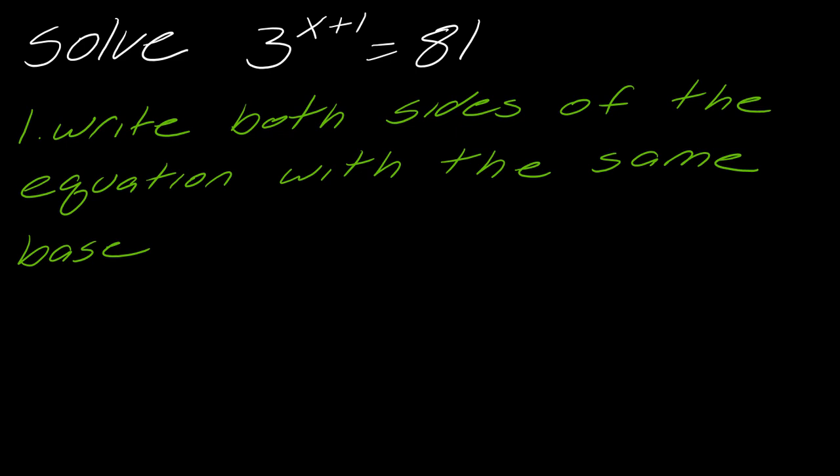All right, so in this case, this side's already written, really, and then this, I would want to write it as the same base as this side. So 3 to the what equals 81. You might have to get out your fingers and toes to figure that out. So this would be 3 to the 4th. So that's the first thing that you've got to do. You want to have the same base on each side.